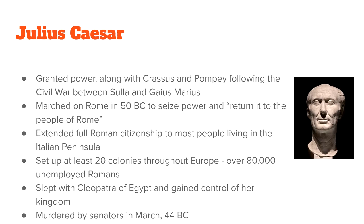He extended full citizenship to most people living on the Roman Peninsula, sent out colonies, and about 80,000 unemployed Romans were sent out to form new colonies and bring in tax money. He also allied with Cleopatra and took over ancient Egypt. For all of his trouble — just like Gaius Marius, the Gracchi brothers before him — he was murdered in 44 BC, on March 17th, also known as the Ides of March. His friend Brutus stabbed him.